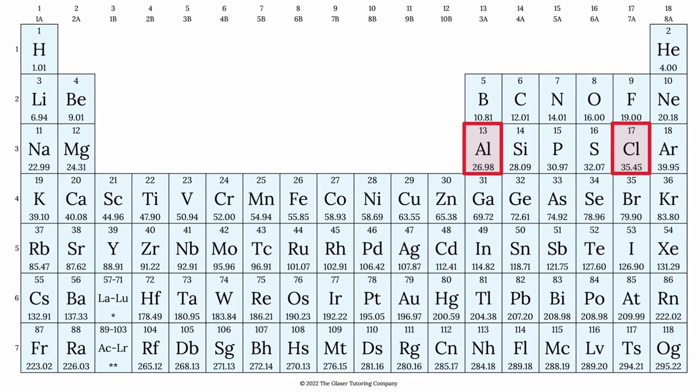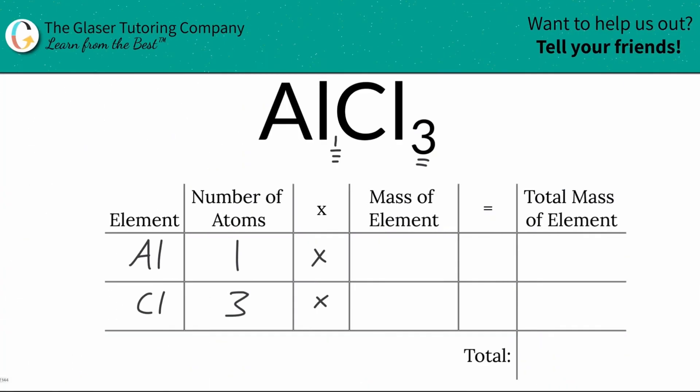So here aluminum is 26.98. Now if you're solving for molar mass then the units are grams per mole. If you're solving for molecular mass those units will be in AMU. So aluminum is 26.98 as I just mentioned, and chlorine is going to be about 35.45.